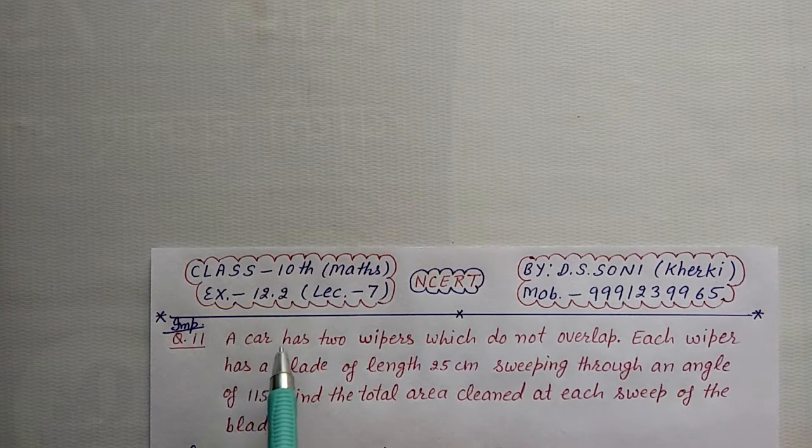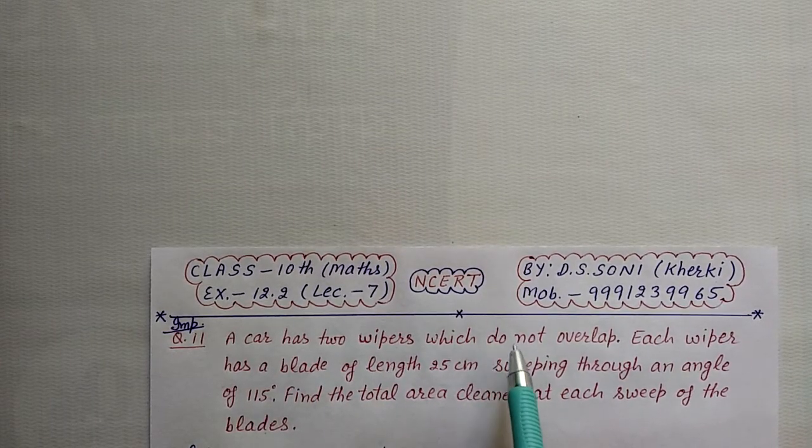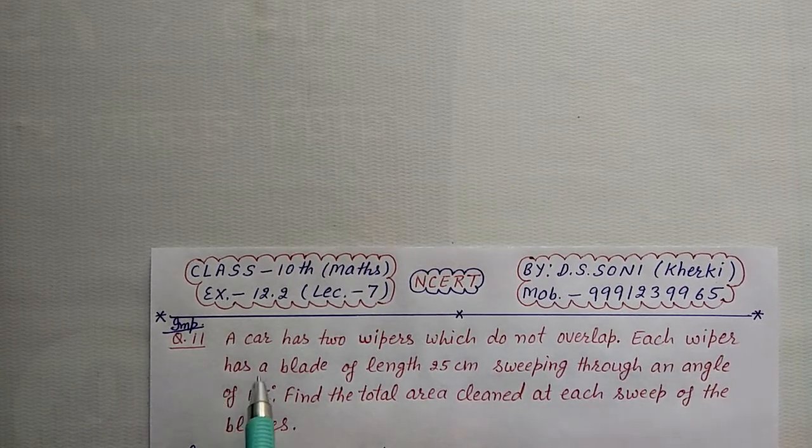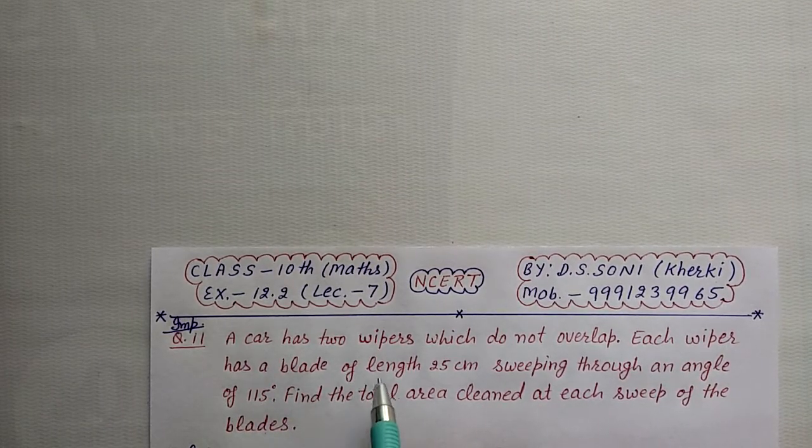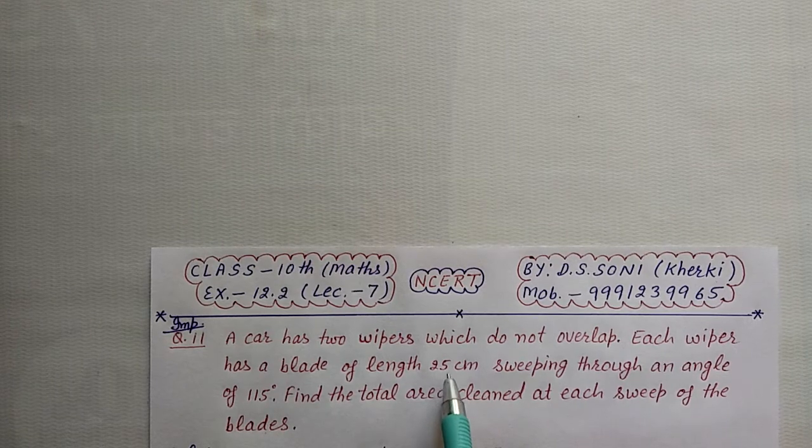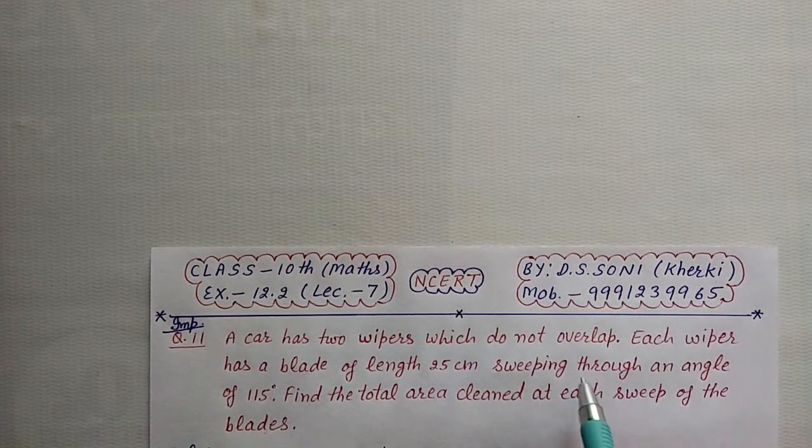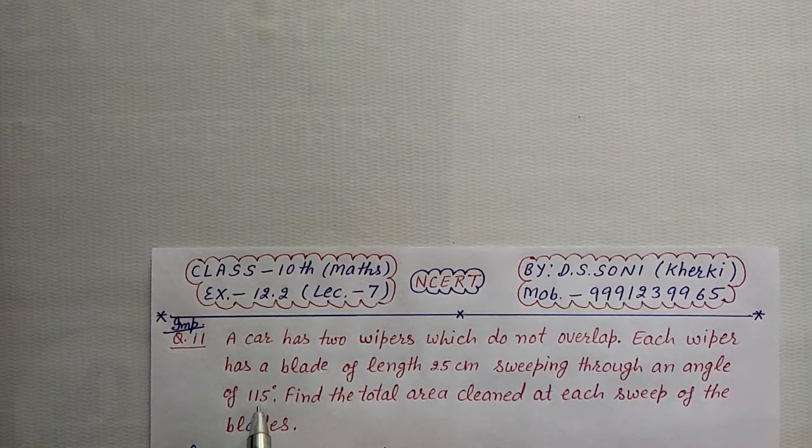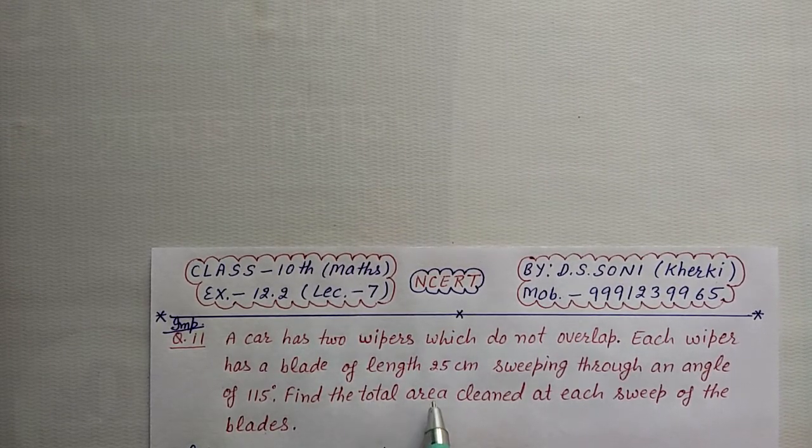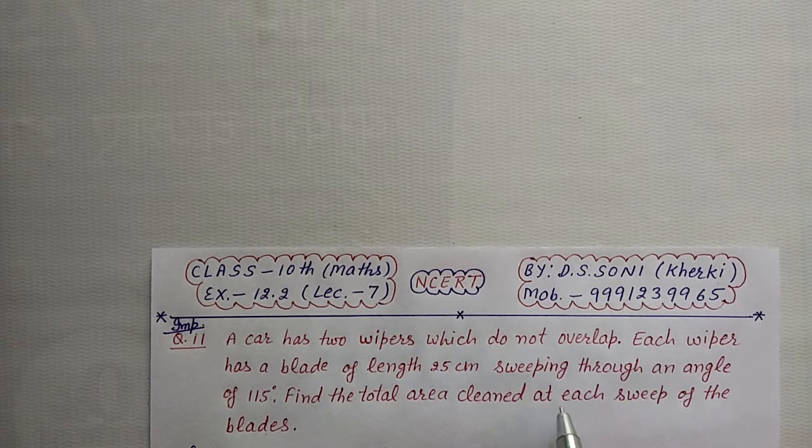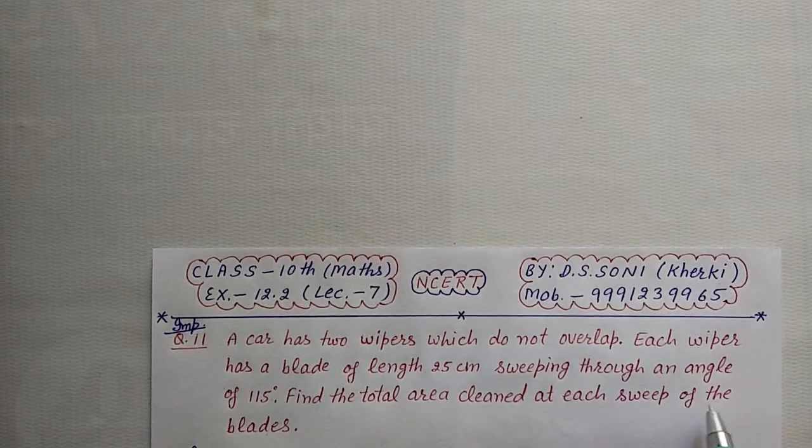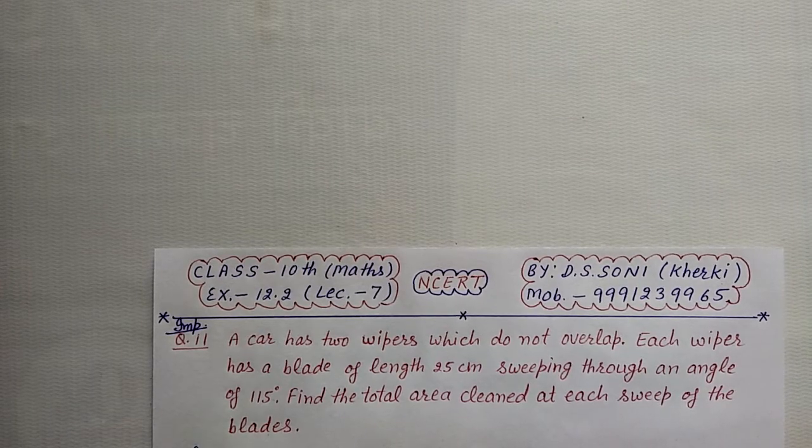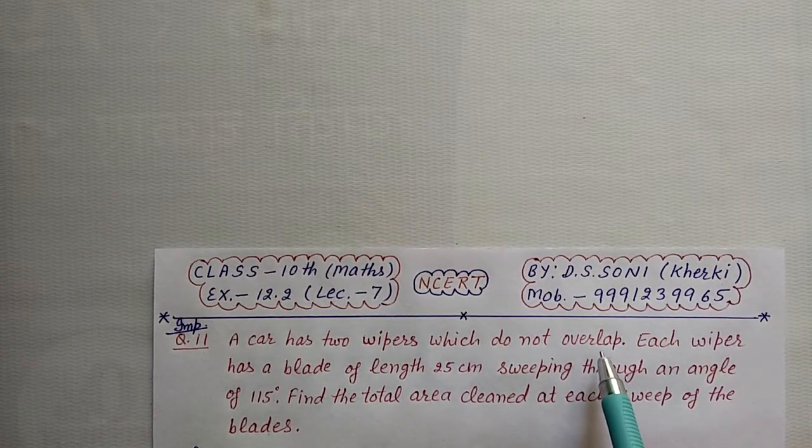A car has two wipers which do not overlap. Each wiper has a blade of length 25 cm, sweeping through an angle of 115 degrees. Find the total area cleaned at each sweep of the blades.